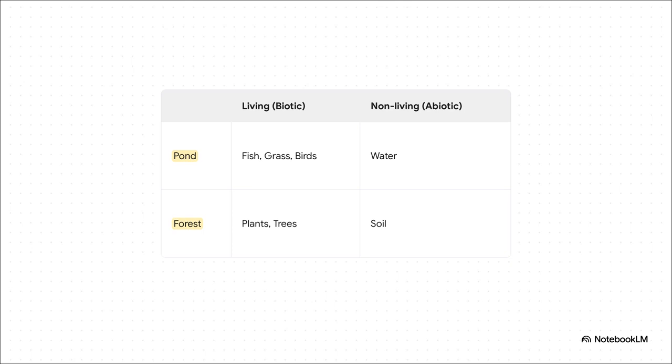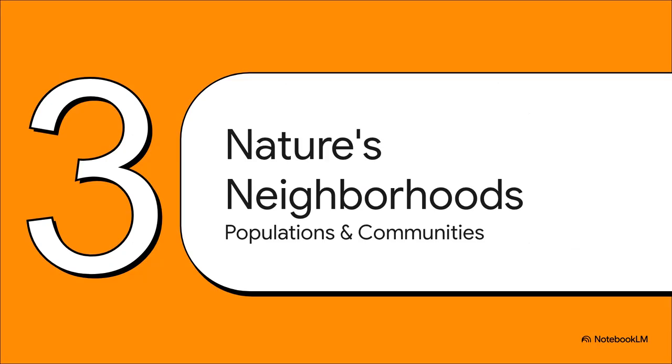Now, every habitat is made up of two kinds of things. You've got the living parts, we call those biotic, like the fish and the grass. And then you've got the non-living, or abiotic parts, like the water and the soil. In the elephant's forest, it's all of it together. The trees, the plants, the dirt, that's what makes their world. All right, so we've got the address, that's the habitat.